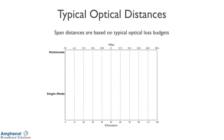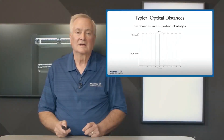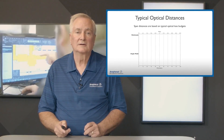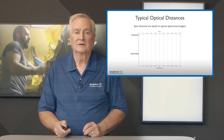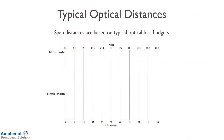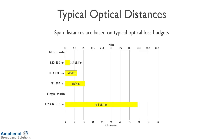Let's look at the span distances for the different optical sources. The chart shows kilometers at the bottom from 0 to 130, and miles on top from 0 to 80.6. With the LED at 850 nanometers, there's 3.5 dB loss per kilometer and it can go about 5 kilometers. At 1300 nanometers, the LED has 1 dB loss per kilometer and can go about 12 to 13 kilometers. With FP and DFB lasers at 1310 nanometers, it's 0.4 dB loss per kilometer and can go almost 90 kilometers. With a DFB laser at 1550 nanometers, it's 0.3 dB loss per kilometer and can go 130 kilometers.